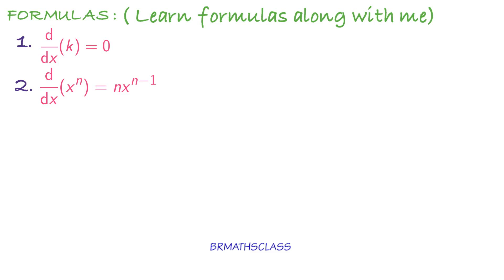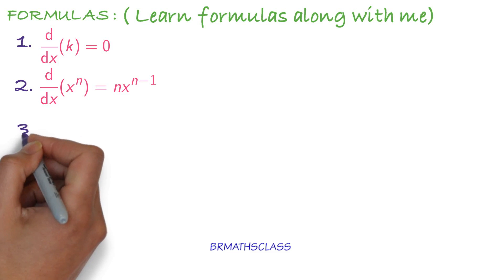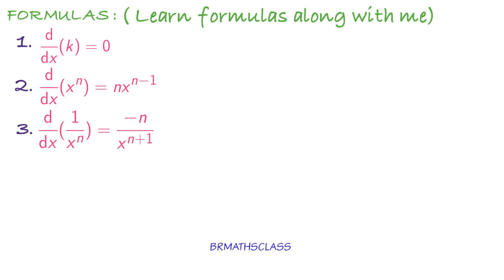Third formula: d by dx of 1 divided by x power n is minus n divided by x power n plus 1. This formula actually comes from the second formula, but we use this type of differentiation very frequently, so we are taking this as a separate formula. D by dx of 1 by x power n — it starts with minus n — is minus n divided by x power n plus 1. You have now learned 3 formulas.